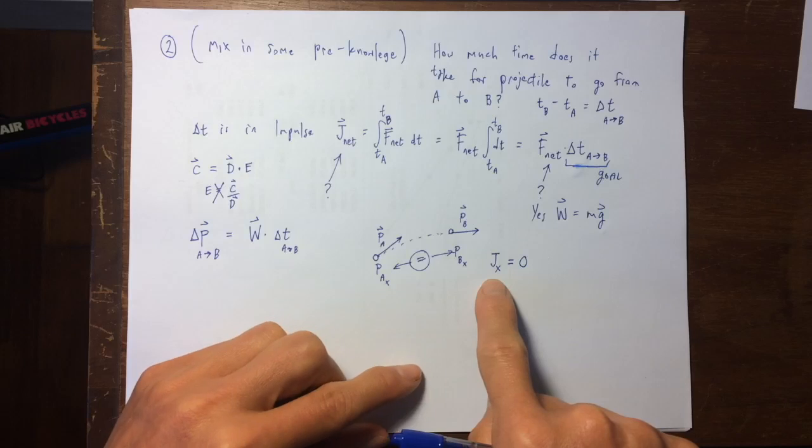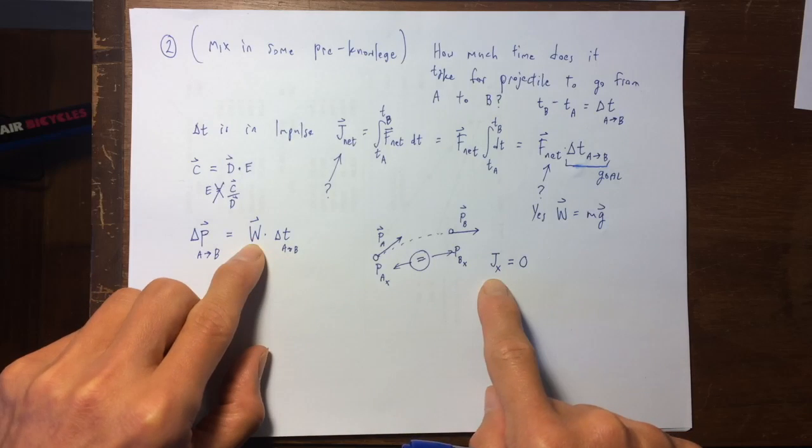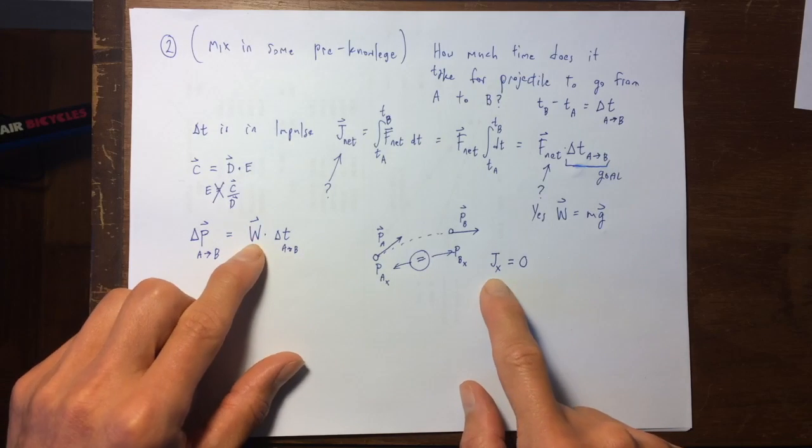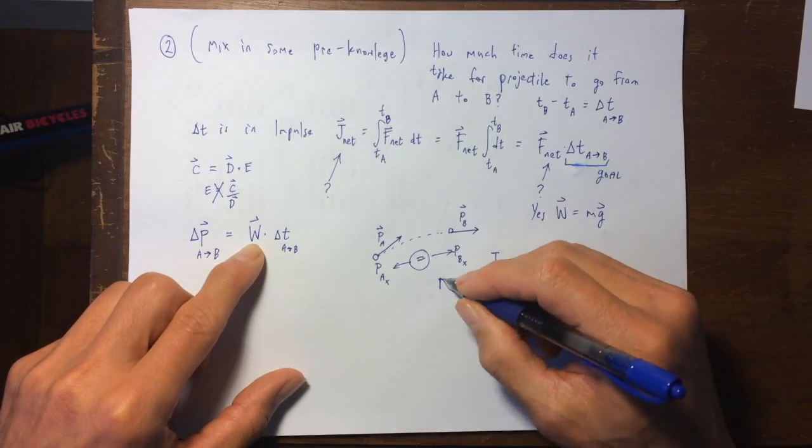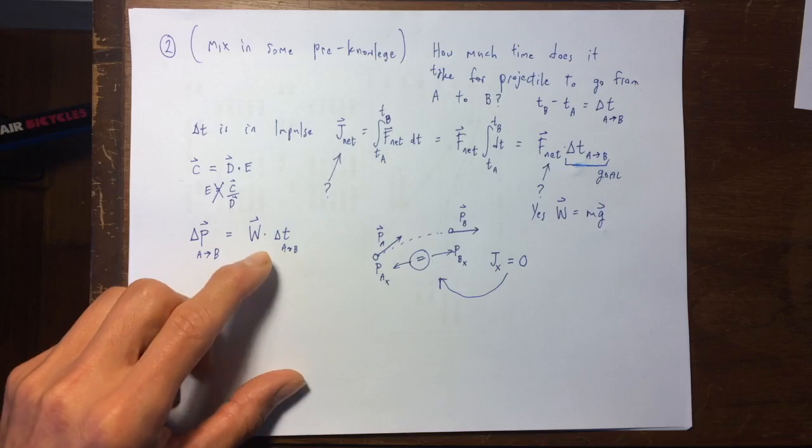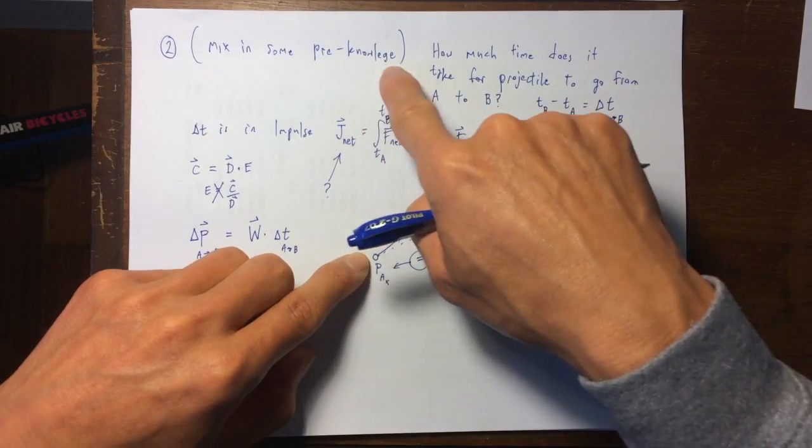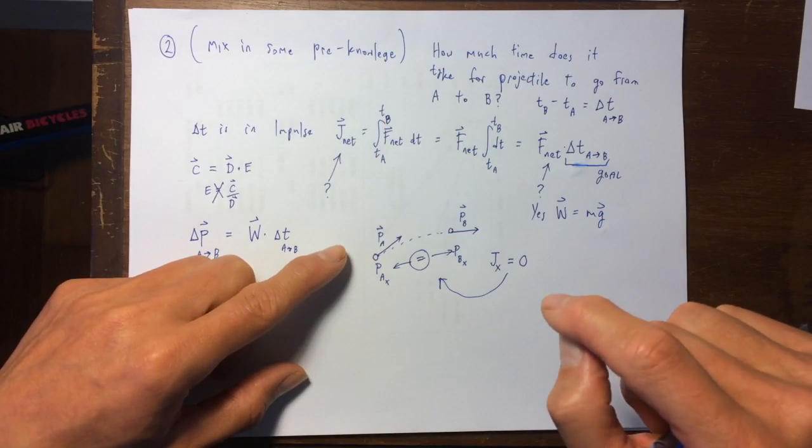And the reason that these two things are equal, is because there never is any impulse in the x direction. There is no impulse in the x direction, and the reason is, is because the weight force, which is the only force available to do any impulse, the weight force is in the y direction. J sub x is zero, therefore, these two things are the same.